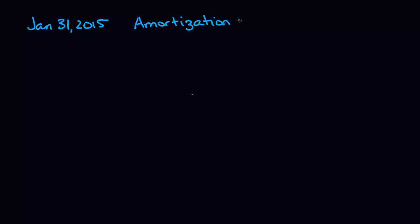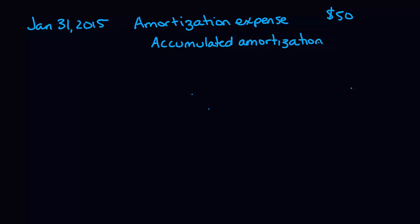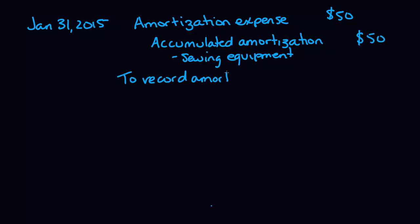Our example didn't specify a date, so let's pretend that SANSA purchases equipment on January 1st of 2015. At the end of the month, on January 31st, our journal entry will be: debit amortization expense for $50, and credit accumulated amortization — with the asset's name. In this case, our asset name is sewing equipment. The description is: to record amortization of sewing equipment.